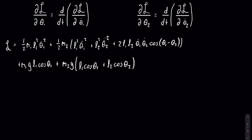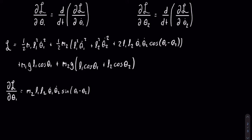We will use the equation on the left first, which means the first thing we have to find is the partial of the Lagrangian with respect to theta one. Looking from left to right, the first theta one appears in the second term — specifically in the third term inside the parentheses. Theta one is inside the cosine function, so we use the derivative of cosine, which is negative sine. Multiplying out that term gives m2 times l1 times l2 times theta1 dot times theta2 dot, and the derivative of cosine of theta1 minus theta2 gives a negative sine of theta1 minus theta2.